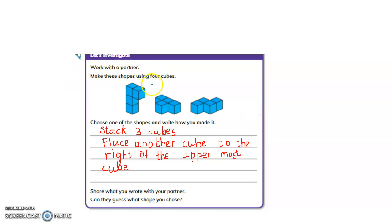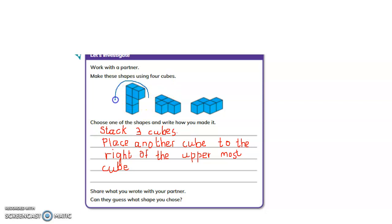Work with a partner. Make these shapes using 4 cubes. Choose one of the shapes and write how you made it. Stack 3 cubes. Then place another cube to the right of the uppermost cube. So, I have chosen this shape. You can describe it, or take another picture and describe it in your own way.